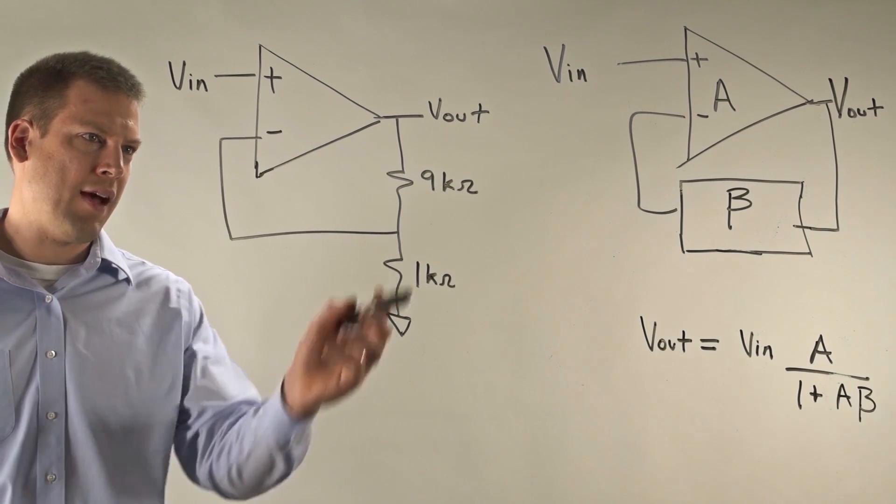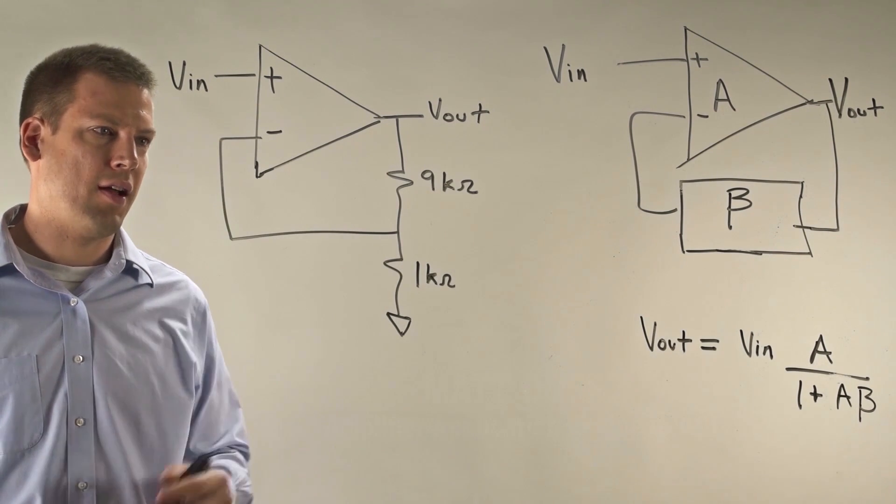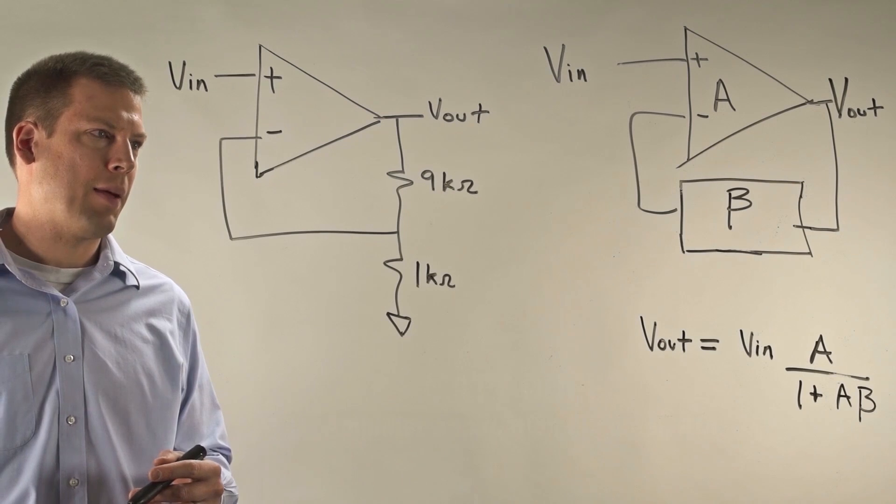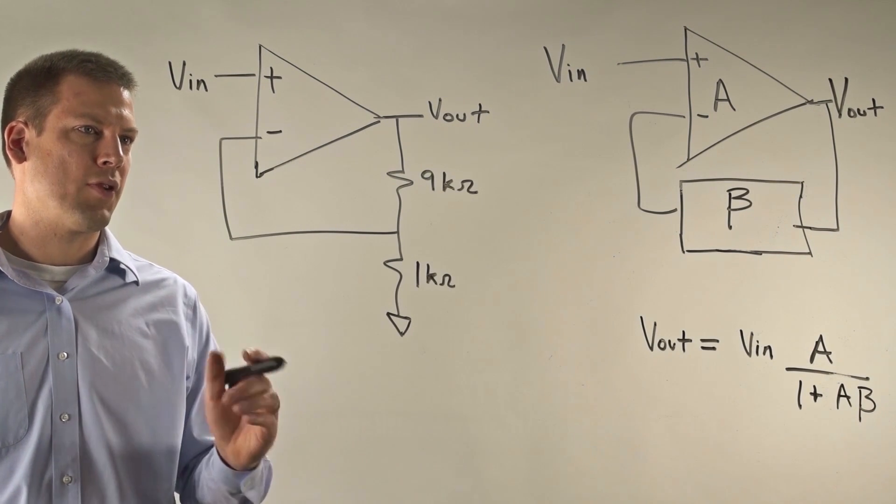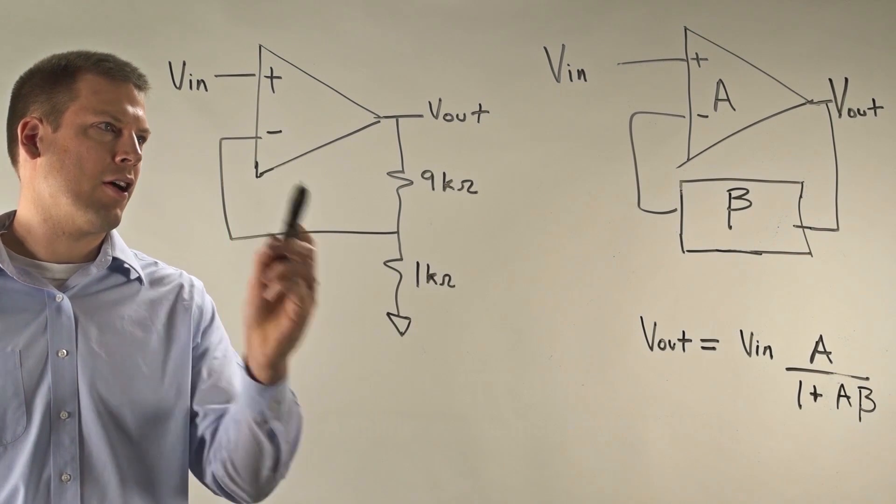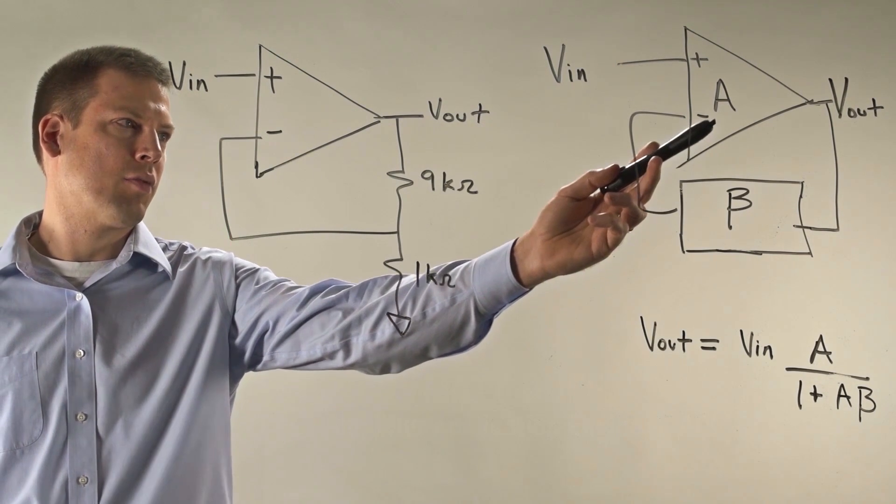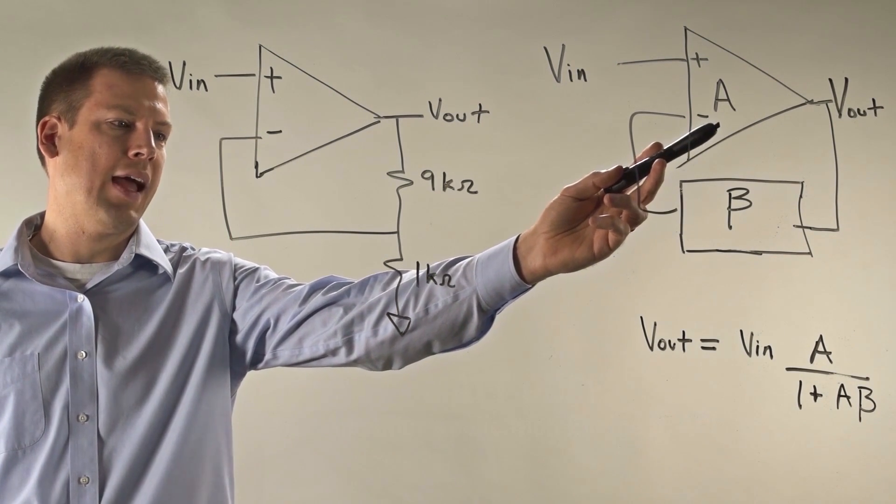So let's say we have a typical circuit here. I've drawn a non-inverting op amp configuration. We can represent this configuration in block diagram form. So I can take this amplifier and I can represent it as this block with its open loop gain of A.